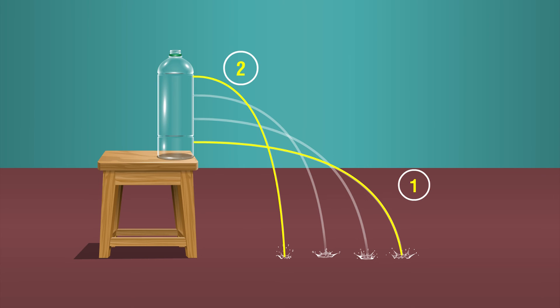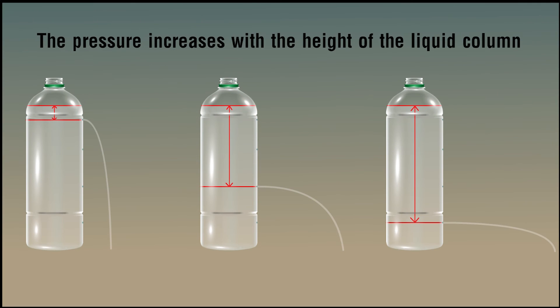This is because the liquid column exerts pressure on the bottom due to its weight and this increases with the height of the liquid column. Hence water stream from the hole at the bottom covers maximum distance due to the high pressure.